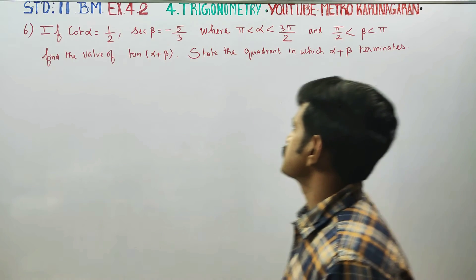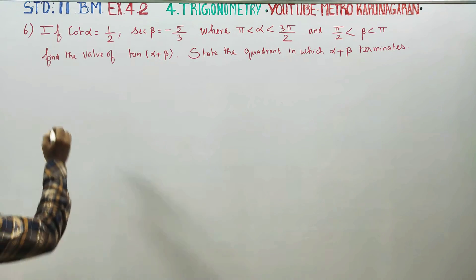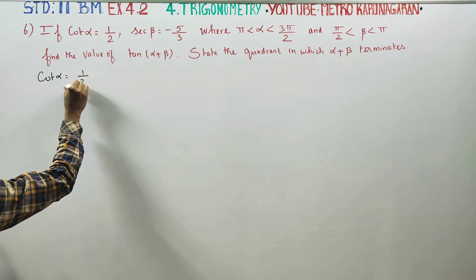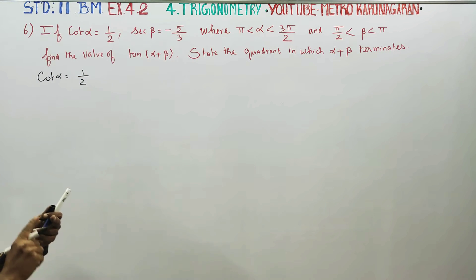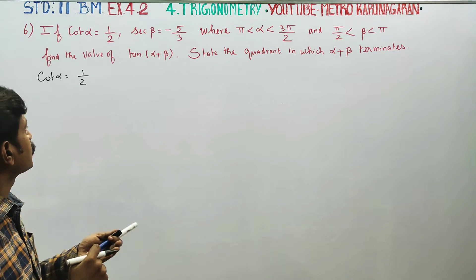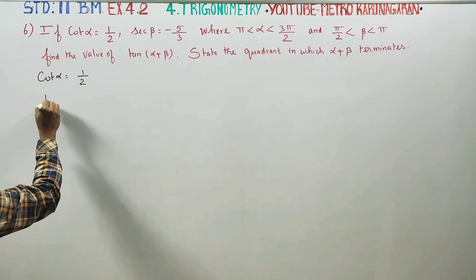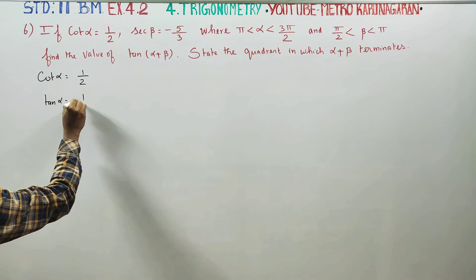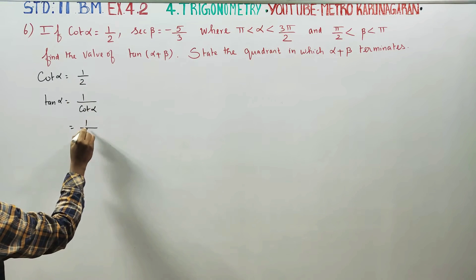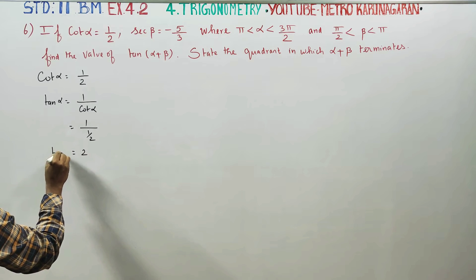In problem number 6, it is given that cot α is equal to 1 by 2. Since tan and cot are reciprocals, cot α = 1/2 means tan α = 1 divided by (1/2), which gives tan α equal to 2.